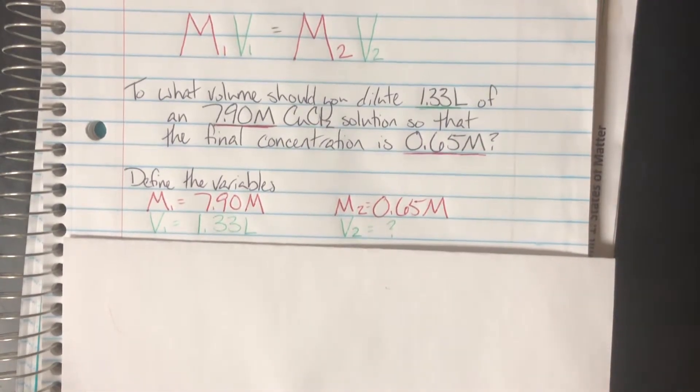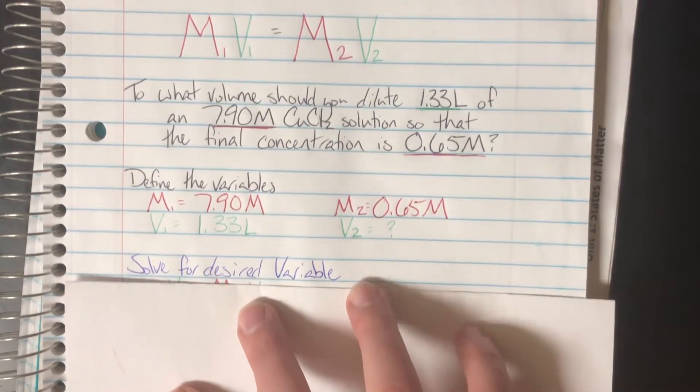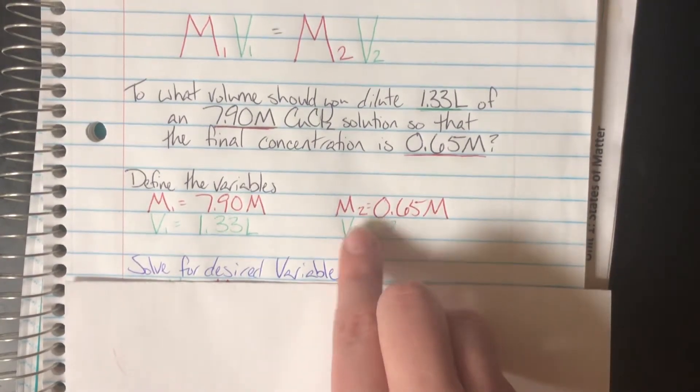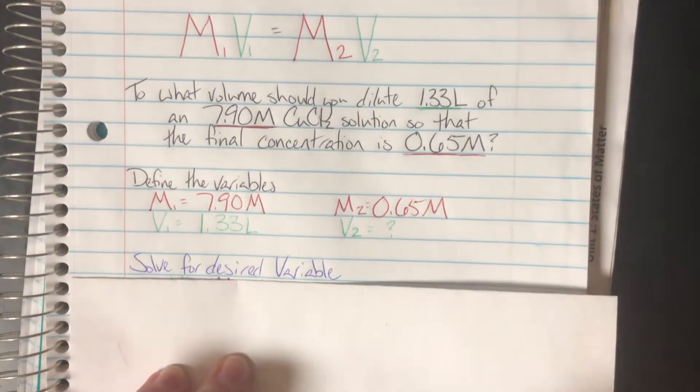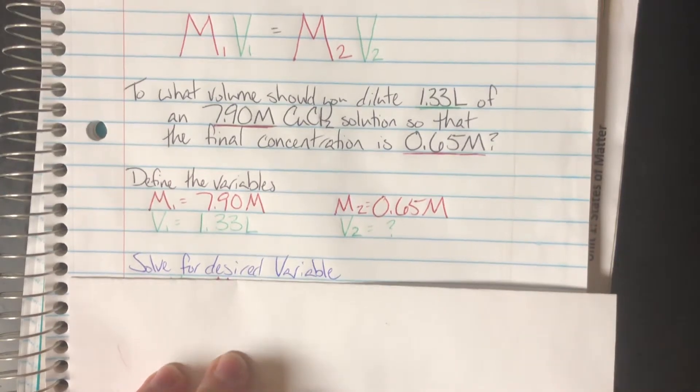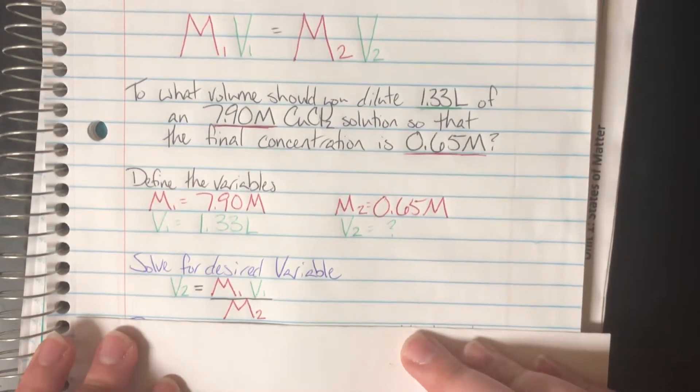Now that I have everything explicitly defined, I can go ahead and solve for my desired variable. The thing that I do not have, that's V2. Well, I see that M2 and V2 were being multiplied together, and to isolate V2, I needed to divide both sides by M2. And that's exactly what I did here.